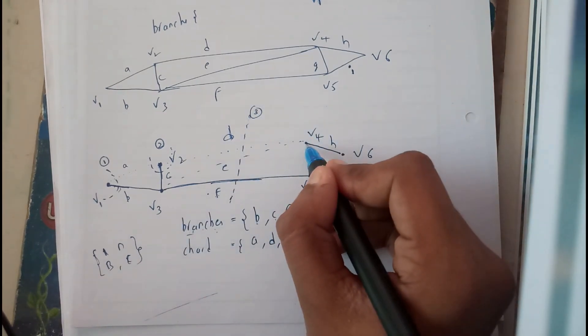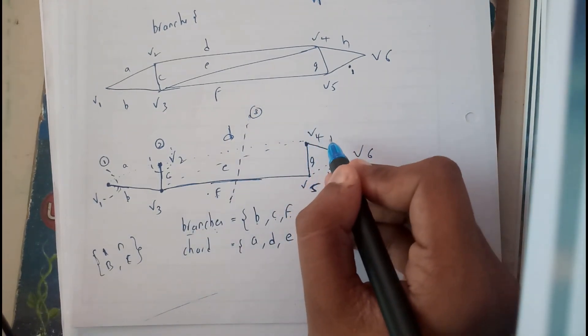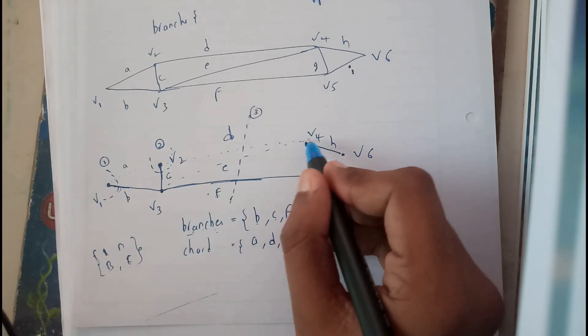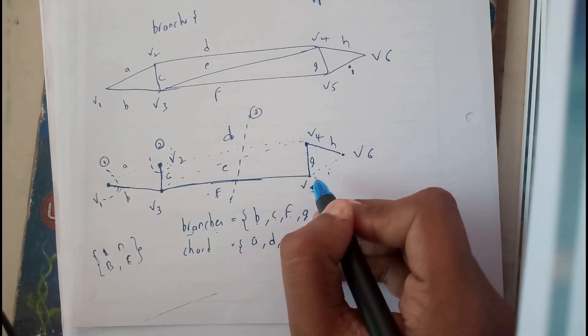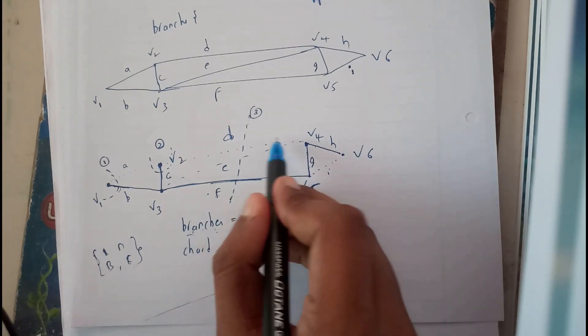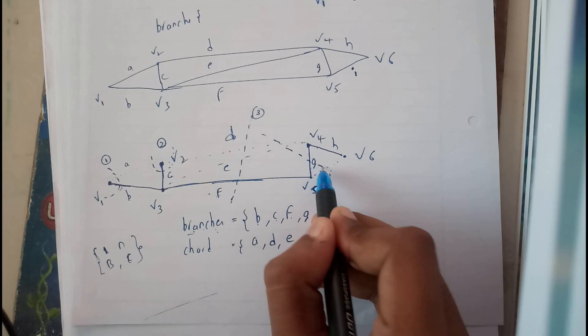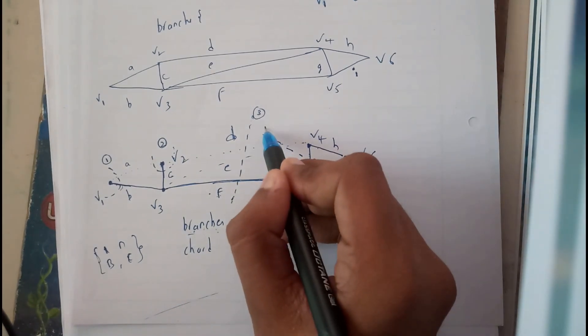Whenever we'll be trying to draw at V4, the same situation - we'll be having two, so it is not possible at V4. We can draw like this for this edge. Yes, this will be the fourth one, and this will be the fifth one.